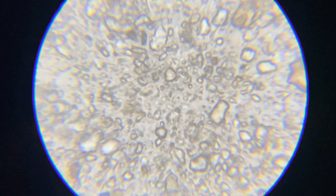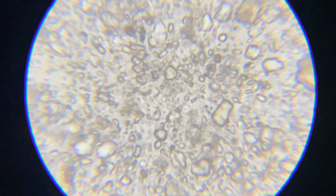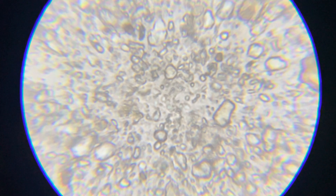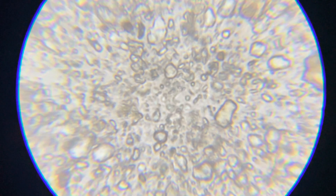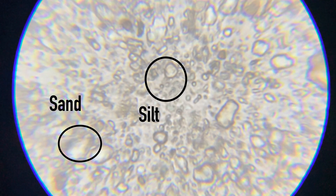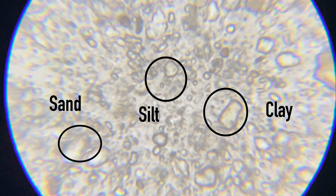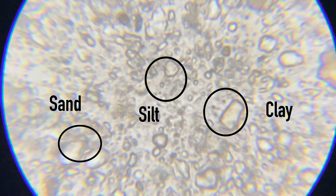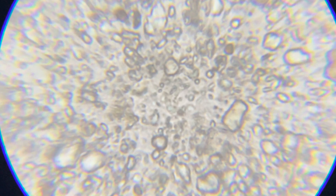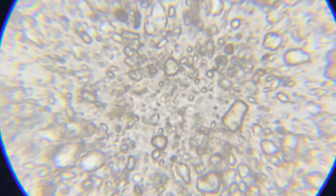Bacteria prefer to feed on simple matter and create enzymes to break down the parent minerals of sand, silt, and clay. Now as they break down the sand, silt, and clay, they are the catalyst to compaction reduction and remediation.